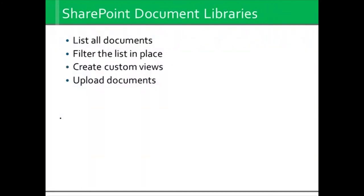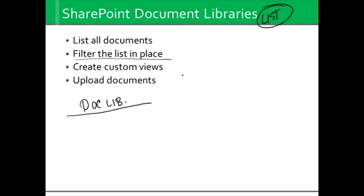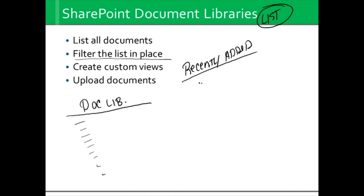We also have SharePoint document libraries — and guess what? Document libraries are just a list. It's a list of documents. You can filter that list in place. Let's say I have my document library and I want something called 'Recently Added.' It could have three documents or 3,000 documents, but now I'm going to sort it so that the newest is first and maybe limit it to the last 10. It's still just a document library, but I'm filtering and sorting it.